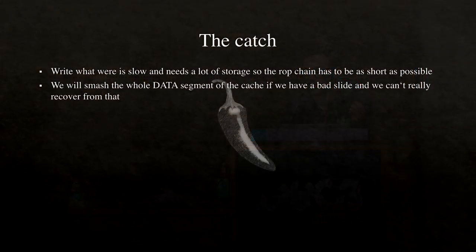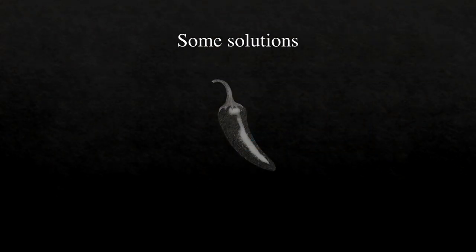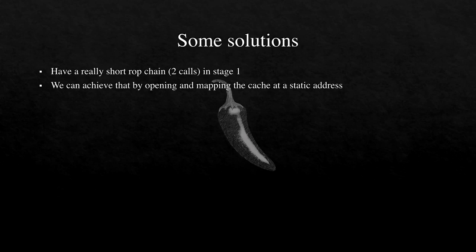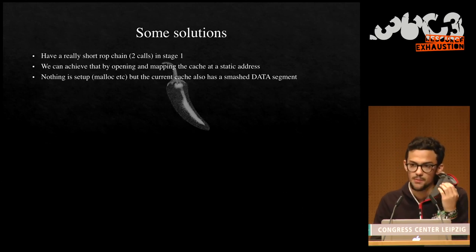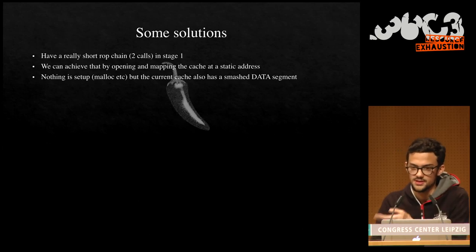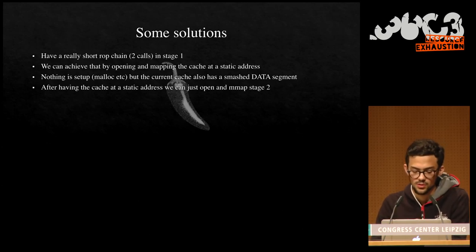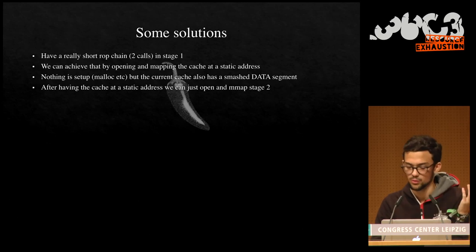Some solutions: keep the ROP chain in stage one very short by opening the big cache file to get a file descriptor, mapping it at a static address, and jumping to gadgets there — since the file is code-signed by Apple. The problem is nothing is set up, so malloc and other functions aren't working. But since we've already smashed the data segment, we don't lose anything. After having the cache at a static address, we use open and mmap functions from it to map stage two into process memory. Stage two is just a really big ROP stack.